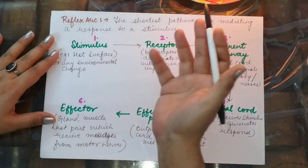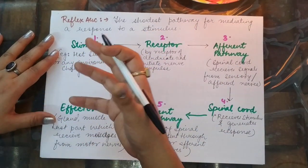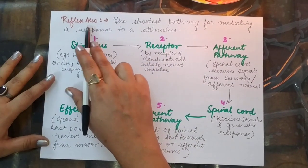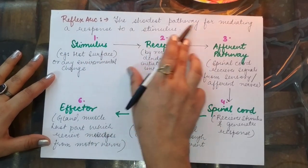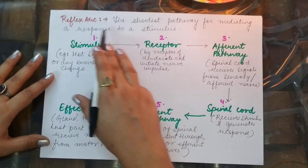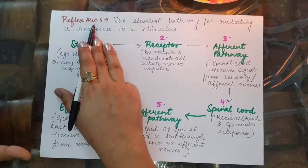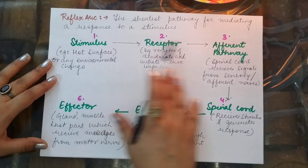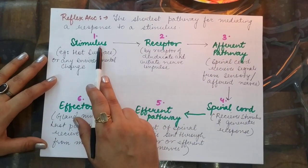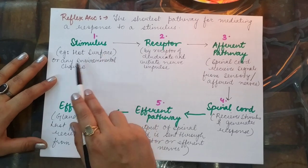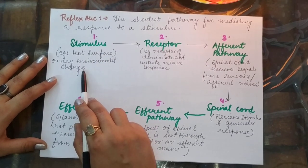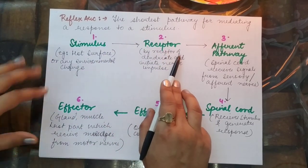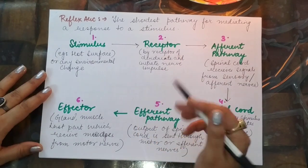The reflex action is carried out by a pathway called the reflex arc. The shortest pathway for mediating a response to a stimulus is called the reflex arc. The process is called reflex action; the pathway is called reflex arc. In a common reflex arc: a stimulus (such as touching a hot surface or detecting a bad smell) is picked up by receptors located on the dendrites of sense organs.